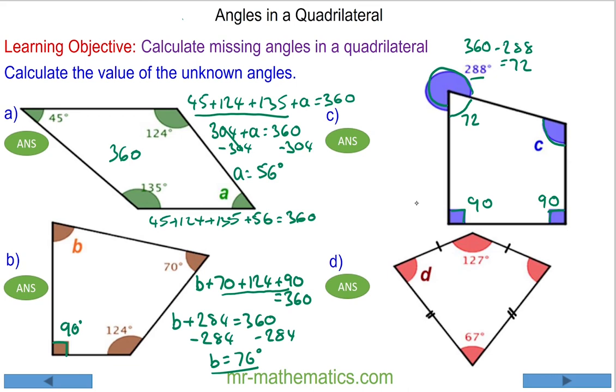So angle C, with two perpendicular angles: 180 plus 72 plus C will equal 360. Therefore, angle C will equal 108 degrees.